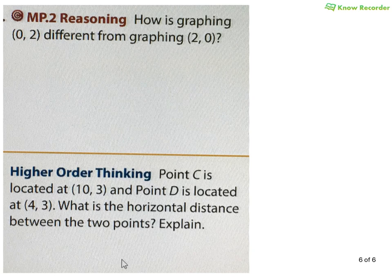Last two questions I wanted to talk about — I love these questions. How is graphing (0, 2) different than graphing (2, 0)? Well, in (0, 2) we are not moving to the right, but in (2, 0) we are moving to the right two places. In the first one we are moving up two places, but in the second we are not moving up at all. You must compare x to x and y to y.